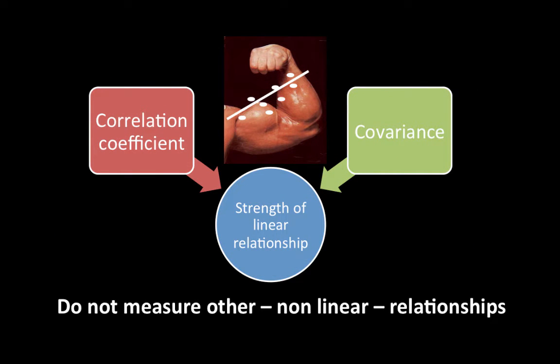Now correlation coefficient is a measure of the strength of linear relationship. Both correlation coefficient and covariance are measures of strength of linear relationship. They do not measure the strength of any other kinds of relationships, for example non-linear relationships.